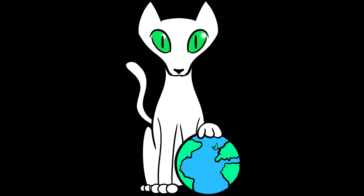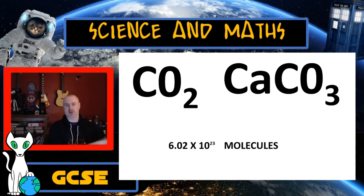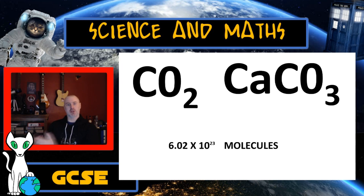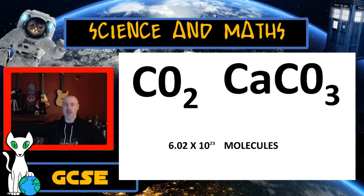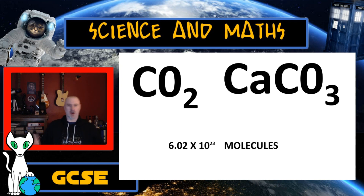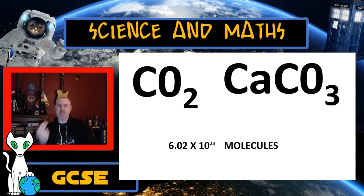Now for compounds. On screen I have two familiar compounds: carbon dioxide and calcium carbonate (limestone). One mole of each contains 6.02 × 10²³ molecules — molecules, not atoms, because a compound has more than one type of atom joined together. But I can't look up the mass number of carbon dioxide on the periodic table because it's not an element. So how do I find what one mole of carbon dioxide weighs?